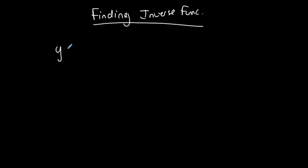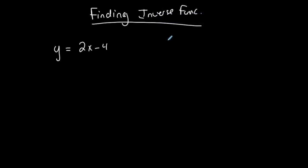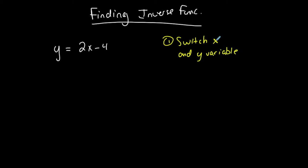Let's start with a linear case. I have y is equal to 2x minus 4. If I want to find the inverse, I'll do the steps here. The first thing you're going to do is switch your x and your y variable. Inverses are interesting because this is what happens: we switch our x and our y variables. So where I see y I put x, and where I see x I put y, to find the inverse.